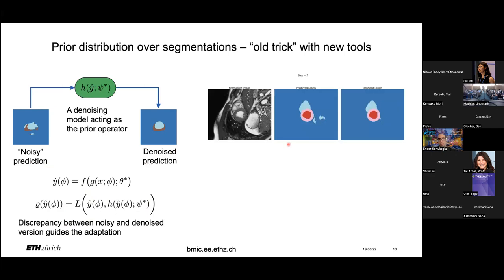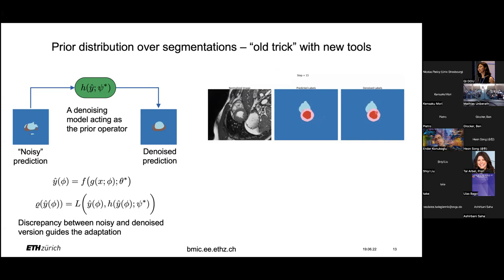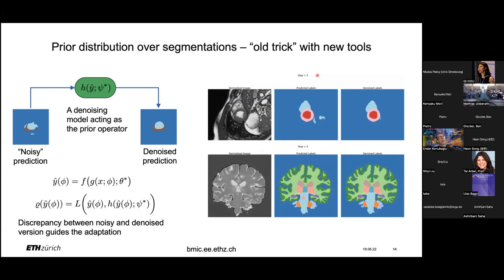Pictorially, we have a cardiac image and a segmentation problem. We have the image whose intensities are being normalized, the predicted labels coming out of the neural network, and the output of the denoising autoencoder. Scrolling through the optimization steps, at the start there is a big discrepancy, but as the optimization runs at test time the discrepancy decreases and the segmentation improves. You can apply the same methodology on multiple anatomies with the same structure.